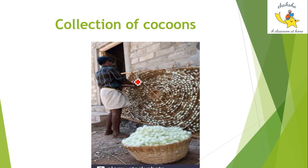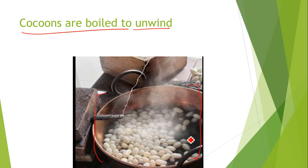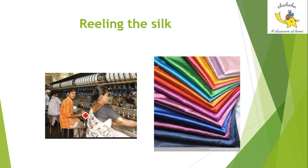The cocoons are ready and collected in baskets. If proper silk is to be obtained, they must be removed at the proper time — if not done on time, the moth will cut and break the silk fiber. Then the cocoons are boiled to unwind the strands of silk. This reeling process uses many machines.